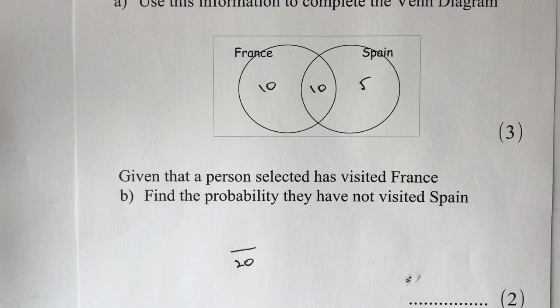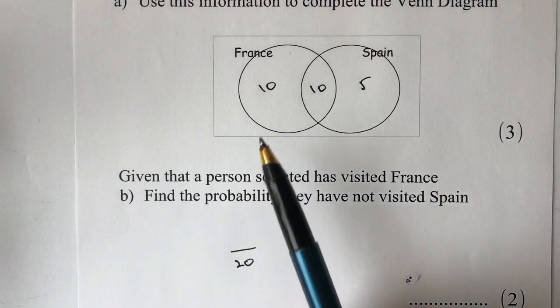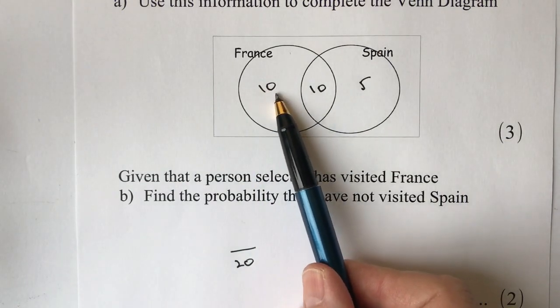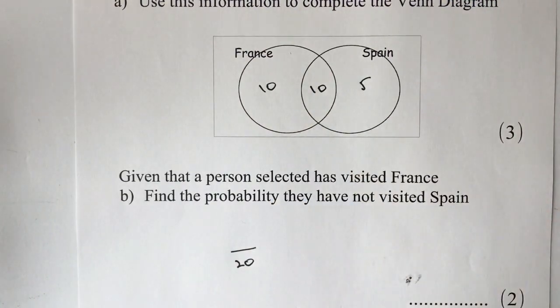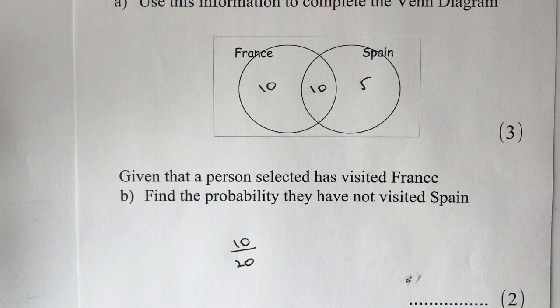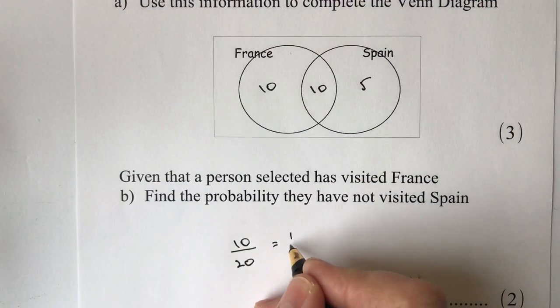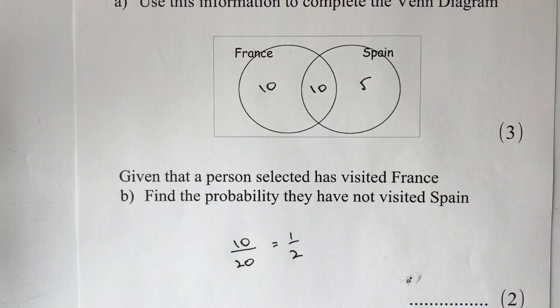And then it says find the probability that they have not visited Spain. Well, they've not visited Spain, it's actually these 10 here, so 10 out of the 20 people altogether have not visited Spain, and that's actually the answer to this question. Now you can reduce it if you want to 1 out of 2, and that's perfectly fine, and that will answer this question.